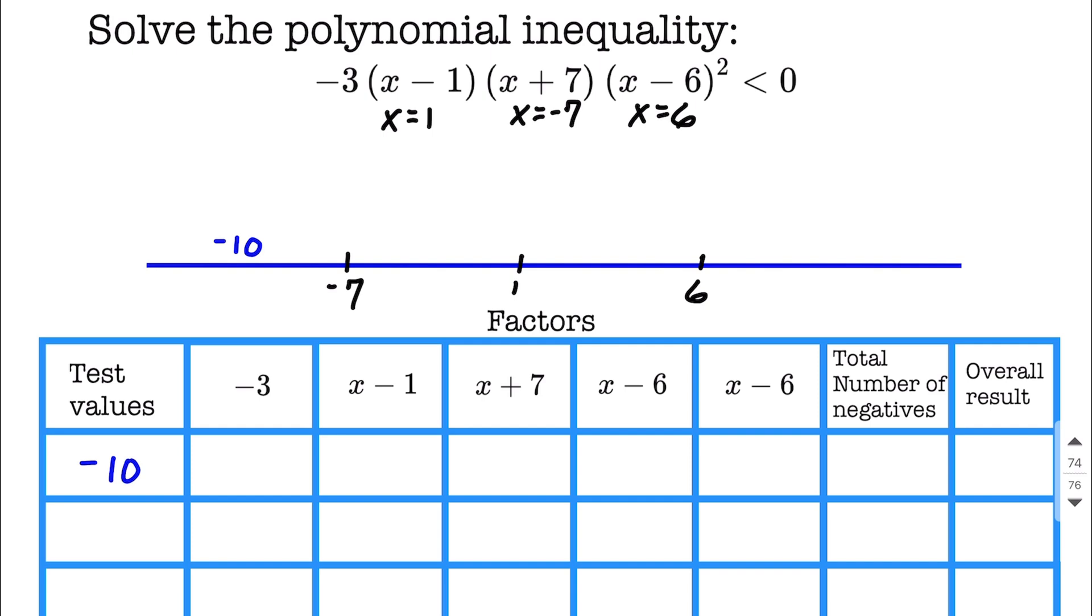Next, what we're going to do is go ahead and plug in our test value, that negative 10, to each one of these factors, and all we care about is, does the outcome turn out being positive or negative? Now the negative 3 is going to consistently be negative the whole way through. You could fill in the entire table straight on down below the negative 3. It's always going to be negative.